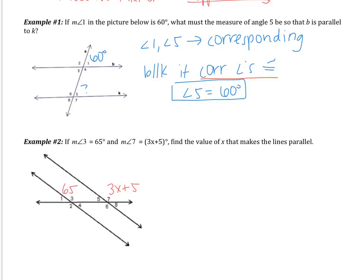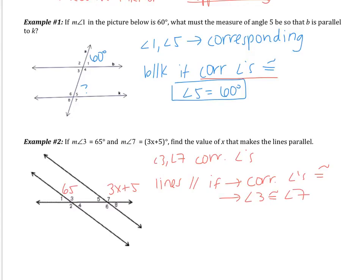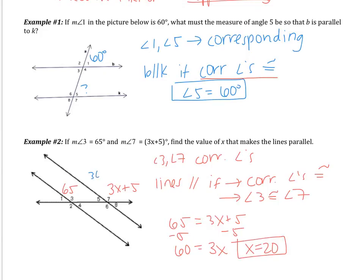The first thing you want to determine is what type of angle pair are 3 and 7. Angles 3 and 7 are corresponding angles. The lines are parallel if we have a pair of corresponding angles congruent — that is, if angle 3 is congruent to angle 7. Setting them equal: 65 equals 3x plus 5. Subtracting 5 from both sides gives 60 equals 3x. Dividing by 3, x equals 20. Checking: substituting 20 back in gives 3 times 20 plus 5, which equals 65. Now I have corresponding angles congruent; therefore, the lines are parallel.